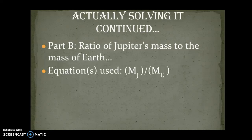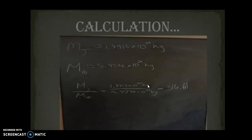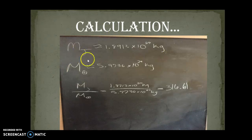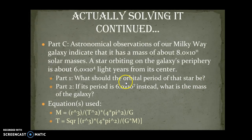This is the second part, which is the ratio. Part B: the ratio of Jupiter's mass to the mass of Earth. The equation used is a ratio, so mass of Jupiter over mass of Earth. Mass of Jupiter is approximately 1.8913 times 10 to the 27th kilograms, as stated quite a few times. Mass of Earth is approximately 5.9736 times 10 to the 24th kilograms. So use the ratio, plug it in, and then you get 316.61. And I know that's right because I looked it up just in case.